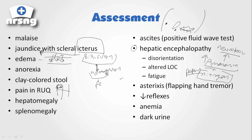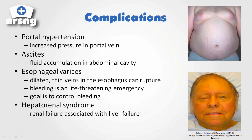Anytime you think of any condition or disease process, you have to first think about what does this organ normally do. Anytime we have a disease process, what that really is is just an alteration in that normal function — so you're going to see basically the opposite of what it would normally do. The biggest complications I want you to know are these five: portal hypertension, ascites, esophageal varices, hepatorenal syndrome, and hepatic encephalopathy.